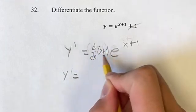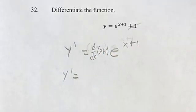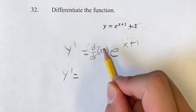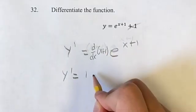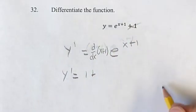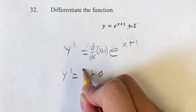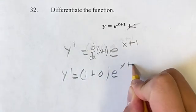So y prime equals, and then calculating this, the derivative of x is just 1 plus the derivative of 1, like we said earlier, is a constant, so it's just 0, times e to the x plus 1.